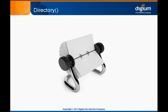The Directory application offers dial-by-name functionality based on the names defined for mailboxes in voicemail.conf. There are options for searching by first or last name, and to give the extension before transferring the caller so that future lookups are unnecessary.